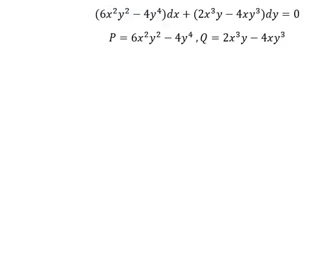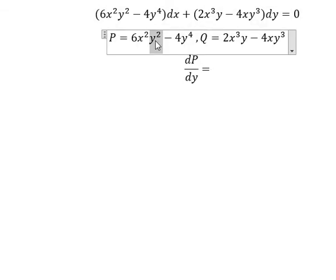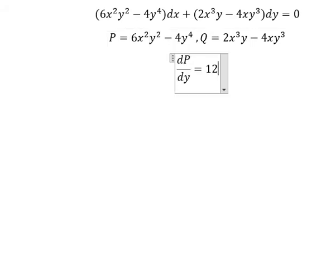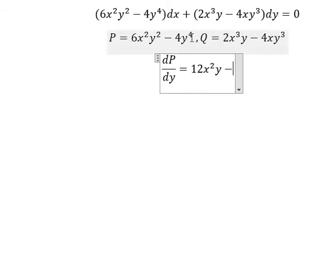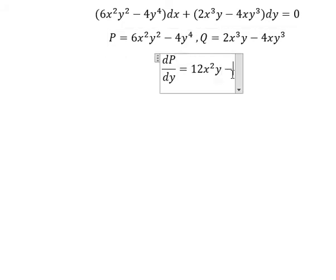With respect to y, so we have dP over dy. First derivative of y squared gives 2y; number 6 with number 2 gives 12. First derivative of y to the power of 4 gives 4y to the power of 3; number 4 with number 4 gives 16.